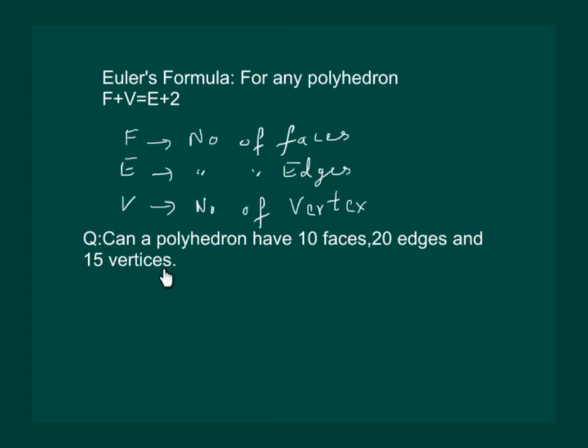To find the solution, let us check using Euler's formula. We have F is equal to 10, V is equal to 15, and E is given as 20. And the formula is F plus V should be equal to E plus 2.